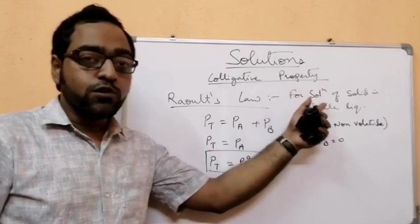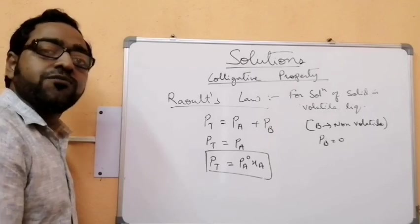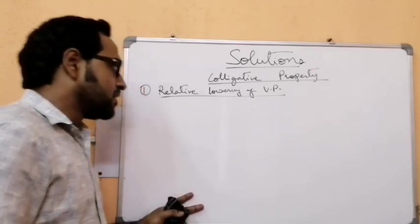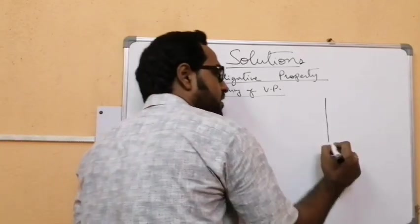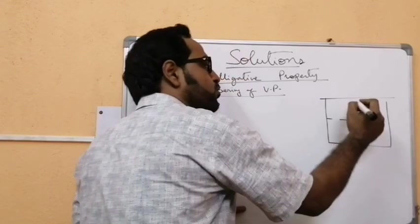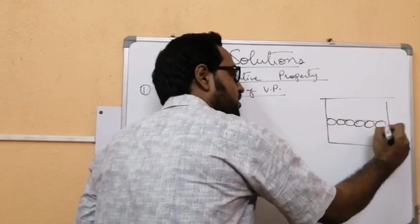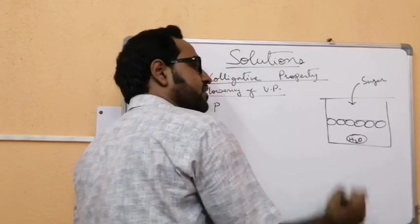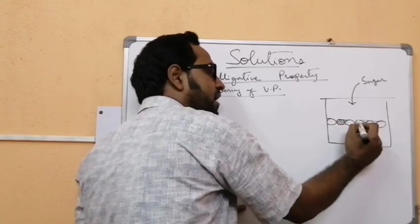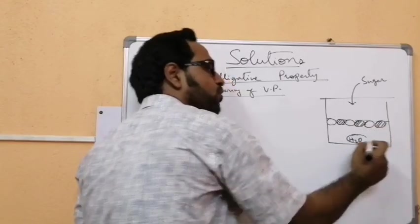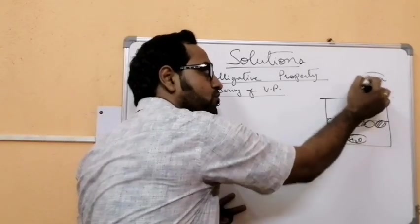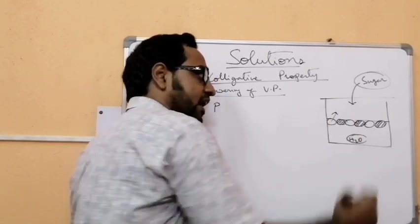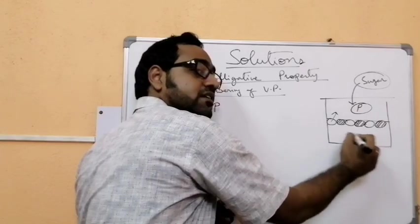Now we will come to the first colligative property, that is relative lowering of vapor pressure. When a non-volatile solute is added to a volatile solvent like water, a part of the surface is occupied by the non-volatile solute molecules. Since evaporation is a surface phenomenon, only the water molecules on the surface can go into the vapor state, and so the vapor pressure of the water decreases.